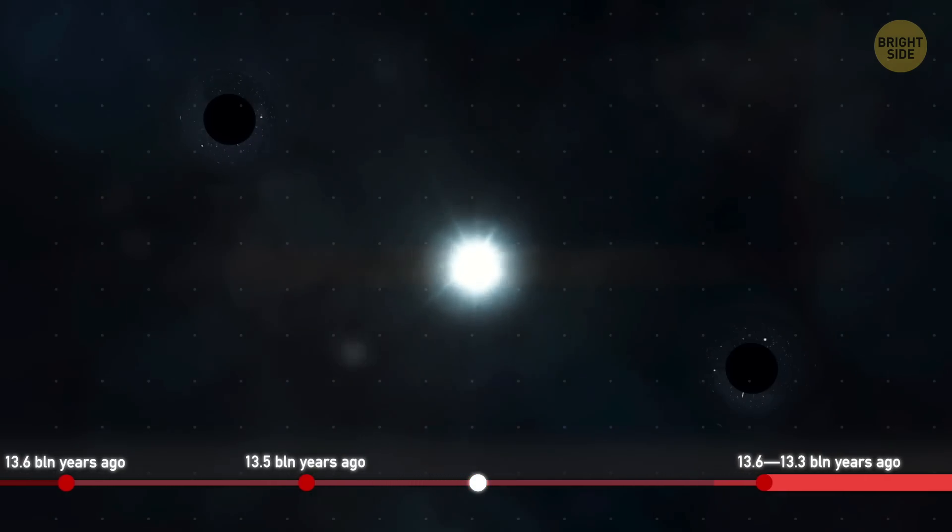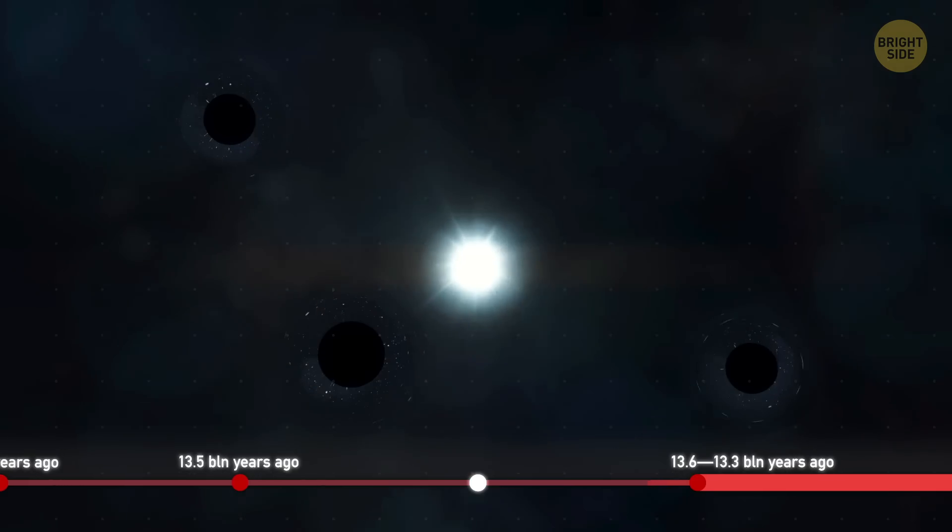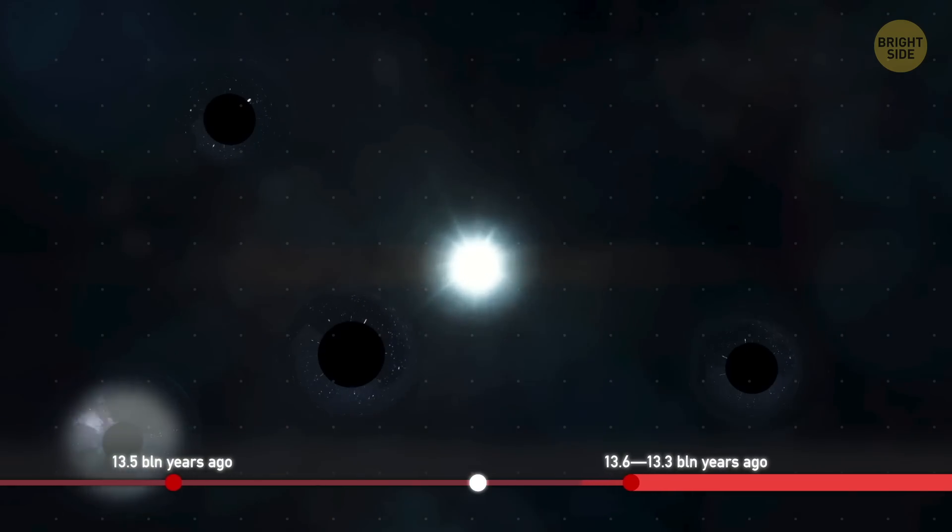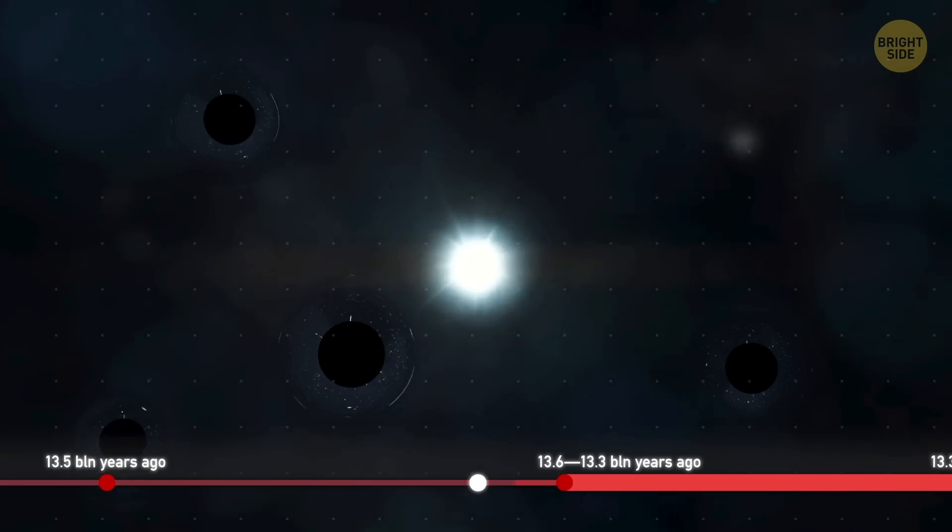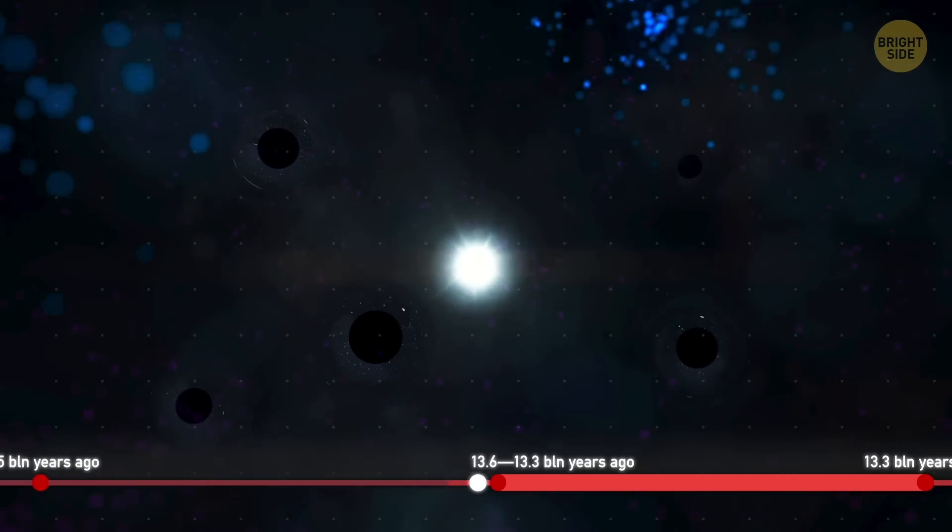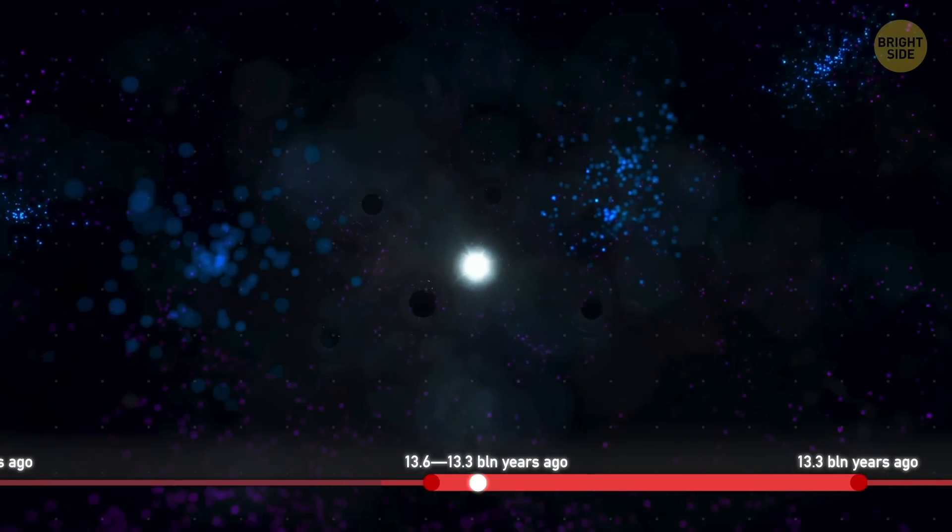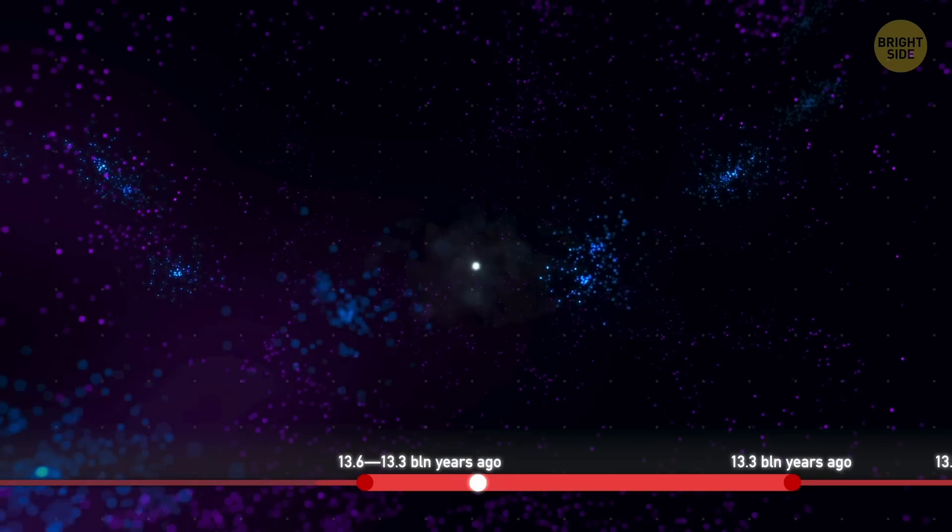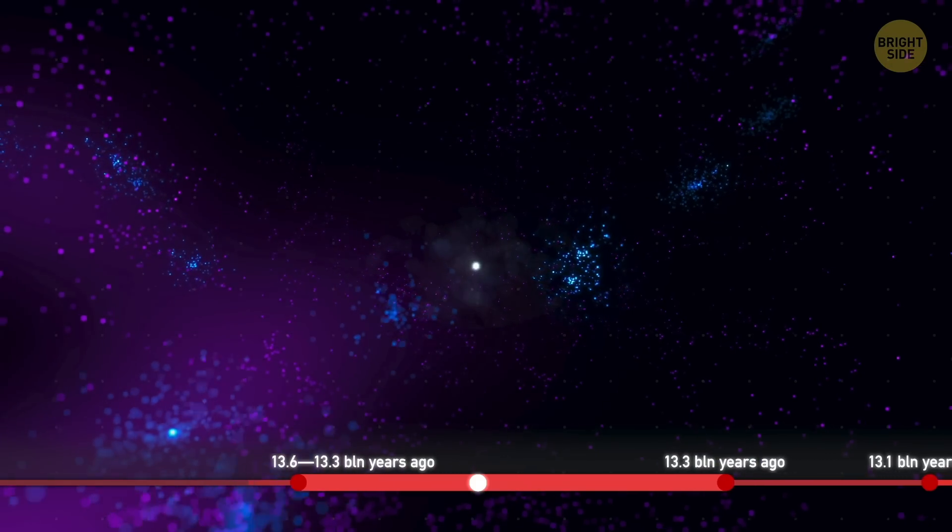Scientists believe they're what's left of exploded stars, but that's not for sure even today. At the same time, cosmic dust and matter began ionizing, helping to form new stars. In the end, it led to thousands and then millions of stars appearing in space.